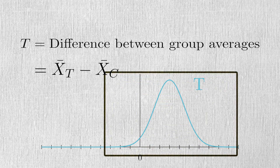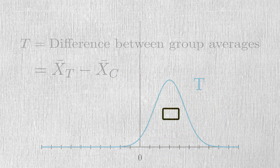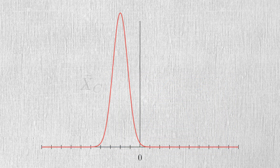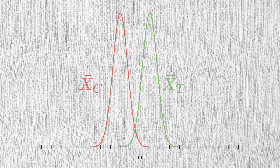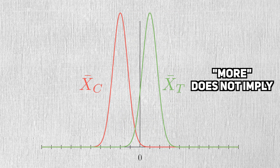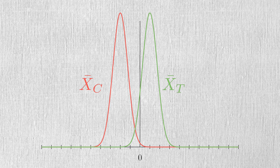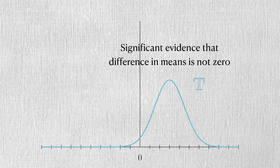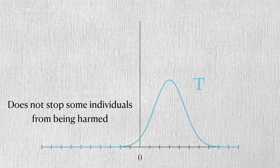This distribution represents the difference in group means, so we can divide it up into a placebo and treatment group. If there was a positive effect, it means that the treatment group had more people who responded better to treatment on average. But more doesn't imply all. It's still very possible for there to have been some people who did not respond to the therapy, or even for some of them to have been harmed by the treatment. So, even when a therapy is shown to work, there is still a possibility that it will not work for a small part of the population.